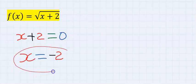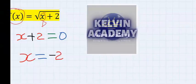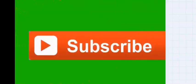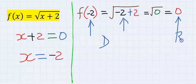You can see we got minus two. If x becomes minus two for the domain, what will be the range? When the domain is minus two, the range will become zero.